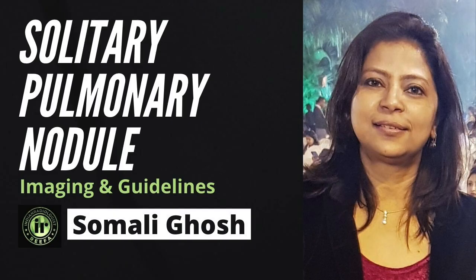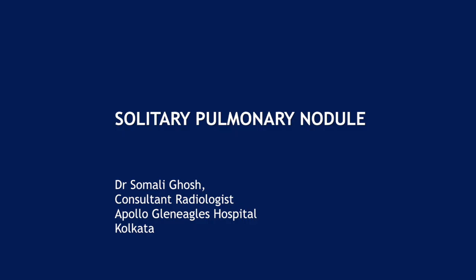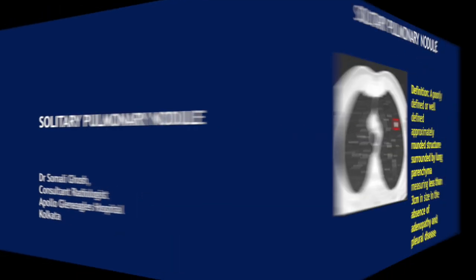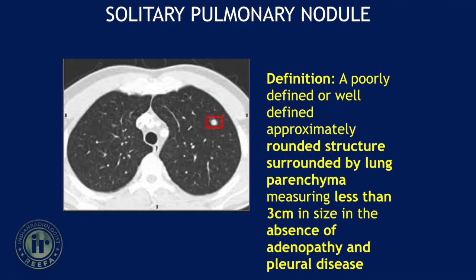This is Dr. Shomali Ghosh and I'm going to talk on solitary pulmonary nodule. We start off with the definition. It is a poorly defined or well-defined, approximately rounded structure surrounded by lung parenchyma, measuring less than 3 centimeters in size, in the absence of adenopathy and pleural disease.